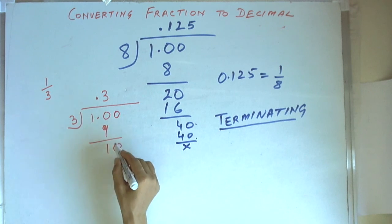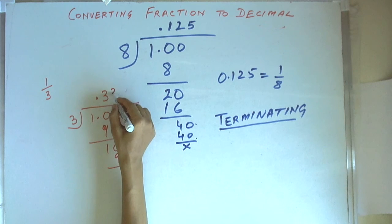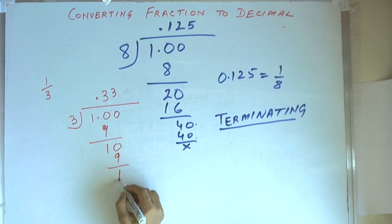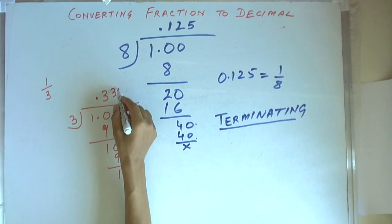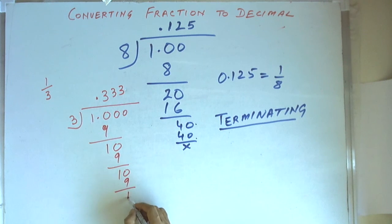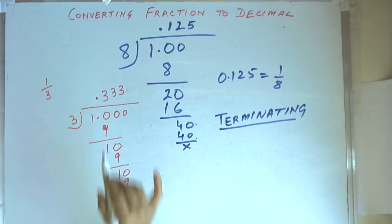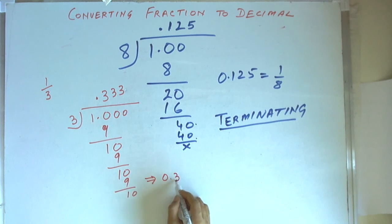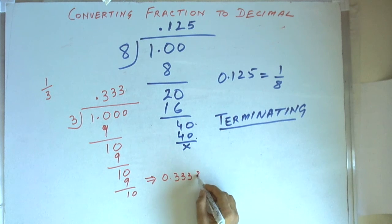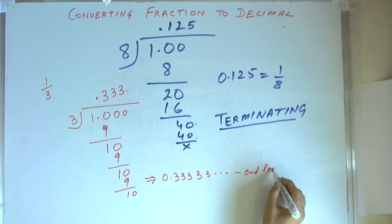We put one more 0 here, and again we get 3 with remainder 9, and then again remainder 1. We put one more 0, and again we get remainder 1 and 0 and so on. This process will continue and the answer is 0.33333 and it is endless.